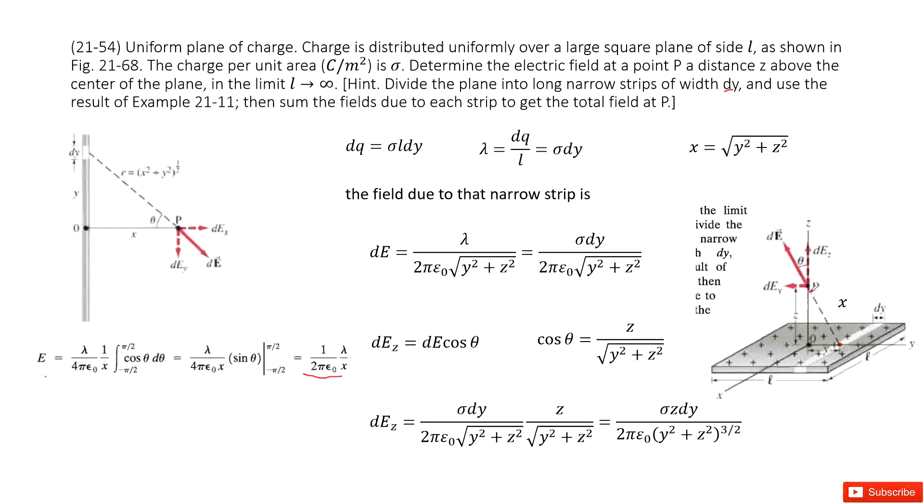So this x equals squared y squared plus z squared. In this triangle, this is a vertical triangle. This is x. This is 90 degrees. So this is y squared plus z squared. So now this x is solved.